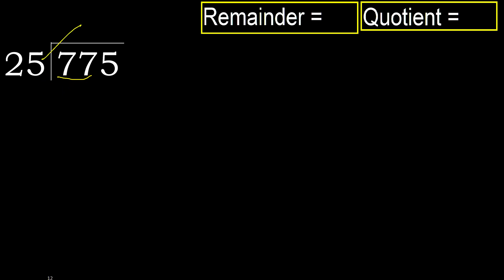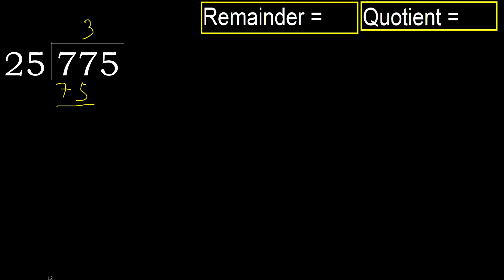25 multiplied by which number is nearest to 77 but not greater? 25 multiplied by 4 is 100, which is greater. Multiplied by 3 is 75, which is not greater. Subtract: 77 minus 75 is 2. Next.